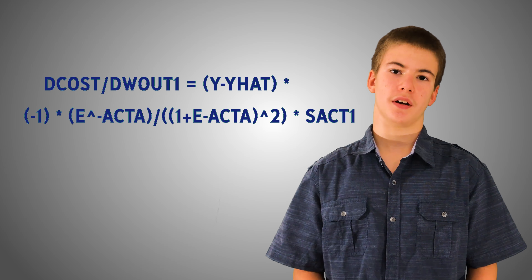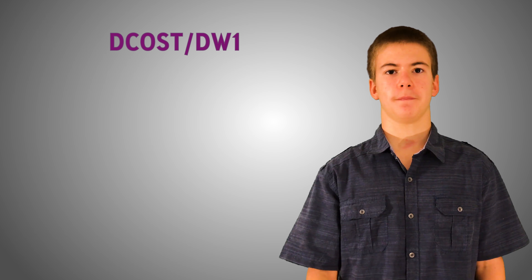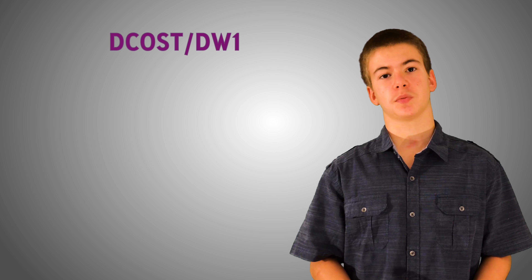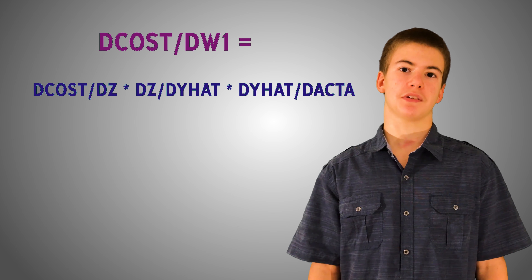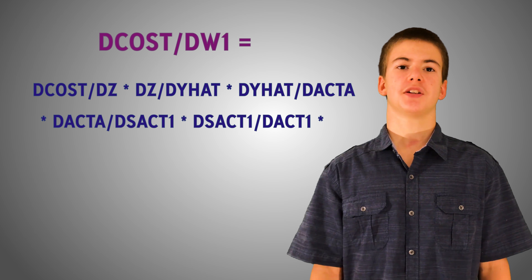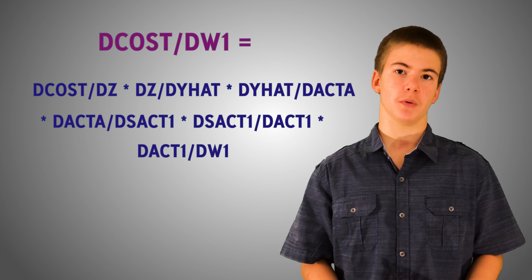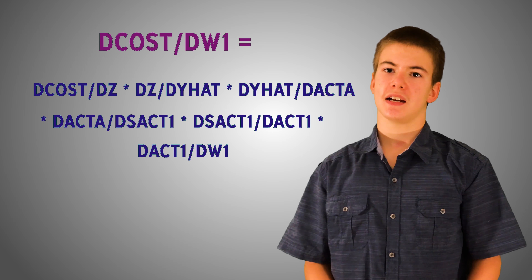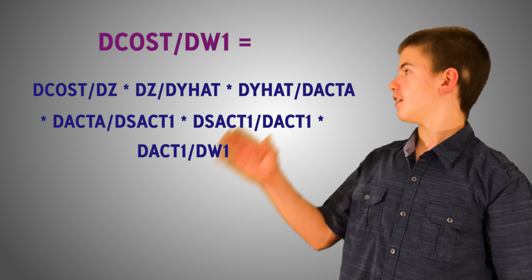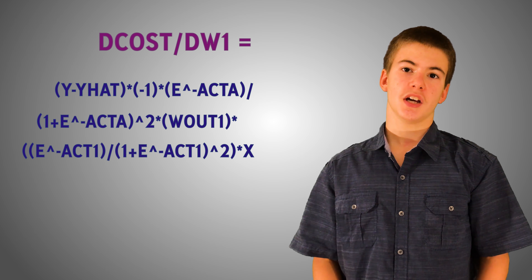So finally, we can say that the derivative of our cost function with respect to w out 1 is y minus y hat times negative 1 times e to the power of negative act a divided by 1 plus e minus act a squared, times s act 1. We also need to calculate the derivative of the cost function with respect to each one of the weights. The derivative of the cost with respect to w1 requires continuing down the chain rule, multiplying through the derivative of act a with respect to s act 1, the derivative of s act 1 with respect to act 1, and the derivative of act 1 with respect to w1.